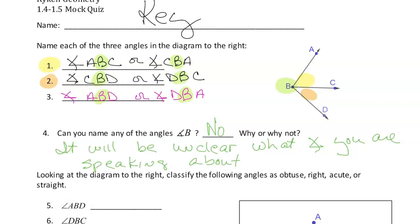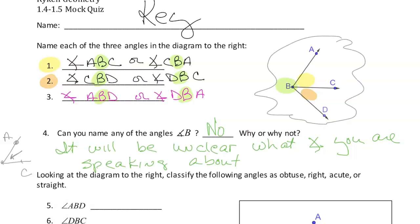If I had a scenario with only one angle — say ABC — you could name that angle B, because there's no confusion. There's only one angle. But in this scenario, there are multiple angles, there are three different angles, so I can't just call it B.